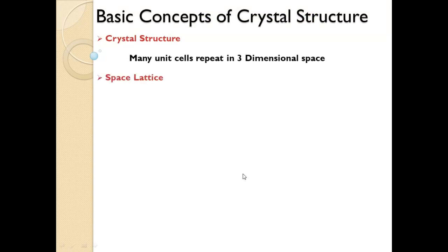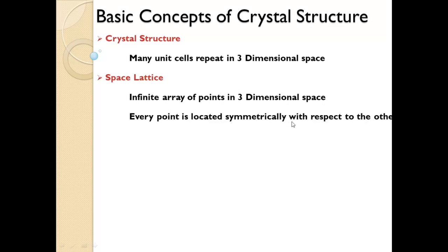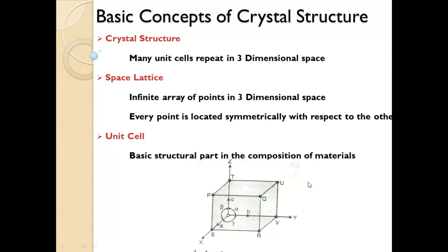Next, crystal structure. When many unit cells repeat in three-dimensional space, that is called a crystal structure. Whenever a unit cell is formed and repeated in three-dimensional space, that concept is called a crystal structure. Second is space lattice — an infinite array of points in three-dimensional space where every point is located symmetrically with respect to each other. Unit cell is the basic structural part in the composition of material. Here you can observe a cubic crystal structure or unit cell with different faces.